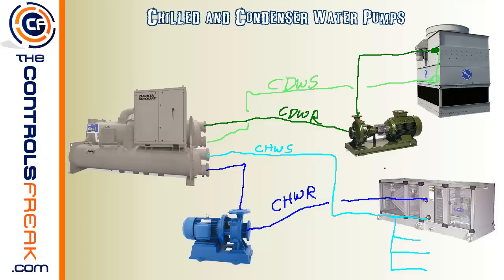There might be some questions about how to distinguish supply and return. For chilled water: the chiller is supplying the cold water, so the water leaving the chiller is chilled water supply. On the condenser side, the cooling tower is what affects the condenser water — it supplies the cold condenser water to the chiller. So condenser water supply comes from the cooling tower, and condenser water return is the hot water leaving the chiller, returning to the cooling tower to be cooled back down.